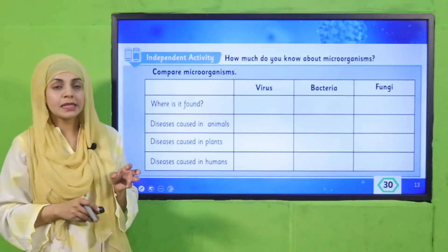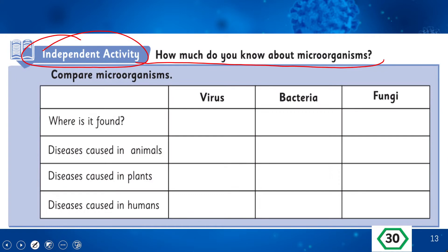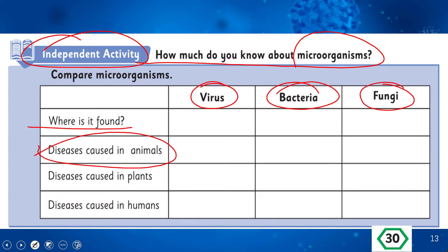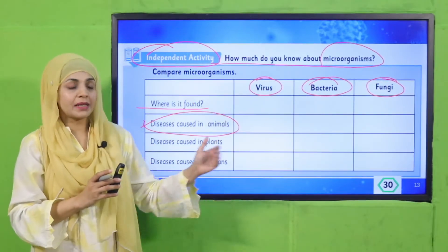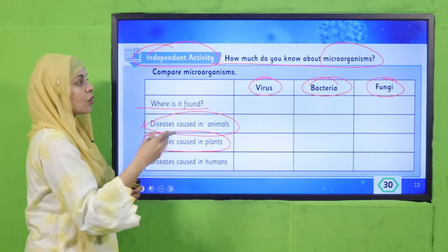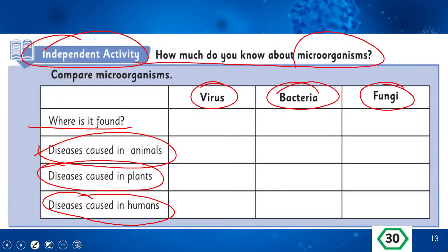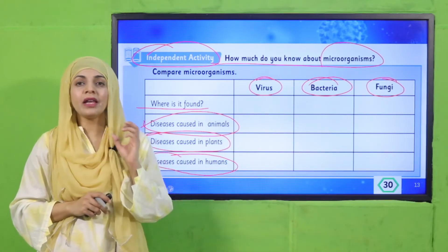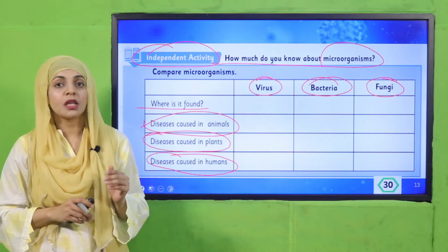Now it is time for an activity on page number 30 in your book — an independent activity: 'How much do you know about microorganisms?' You need to fill in where virus, bacteria, and fungi are found, then write diseases caused in animals, diseases caused in plants, and diseases caused in humans — for example, hepatitis for viruses, cholera for bacteria, and athlete's foot for fungi. Write any one disease under each category and complete the activity.